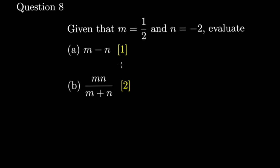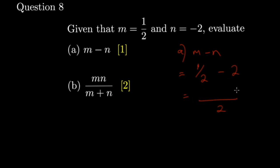Question eight: find m minus n given the formula — this is a substitution question. Substitute: m is one-half, n is negative two. Work out the primary school arithmetic: two divided by one gives two; one times one is one; one into two is two; two times two is four. Then negative one minus three equals one minus four, giving minus three. So the answer is negative three over two.